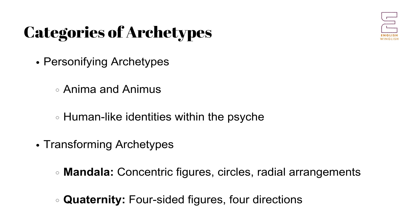Transforming Archetypes are not necessarily personalities but include typical situations, geometric figures, places, and other elements that facilitate personal growth and transformation. These Archetypes play a significant role in the process of individuation, where individuals strive for self-realization and wholeness. Two main Transforming Archetypes discussed by Jung are the Mandala and the Quaternity.